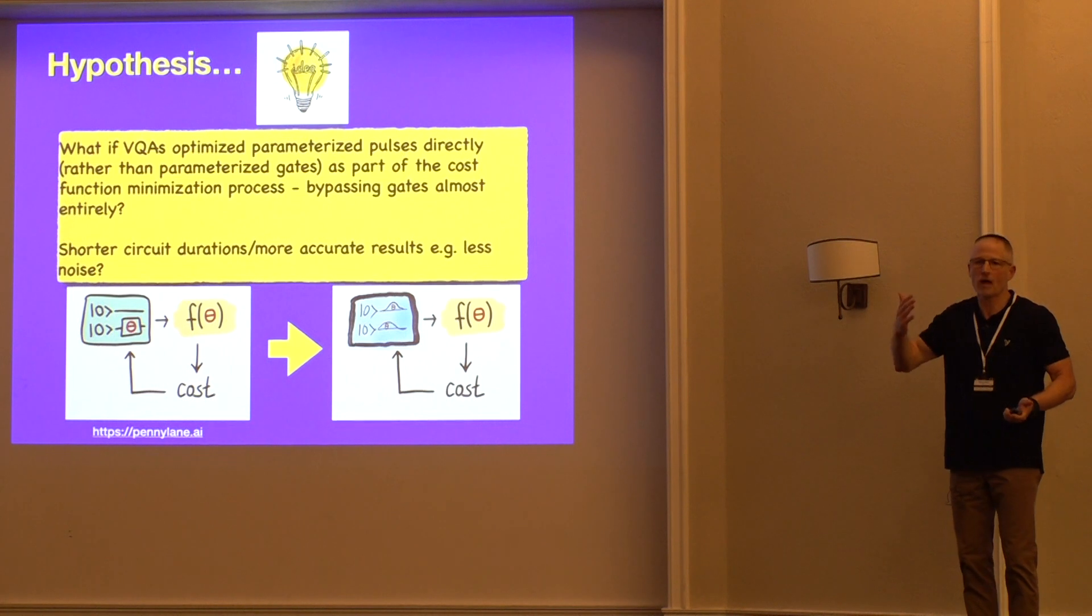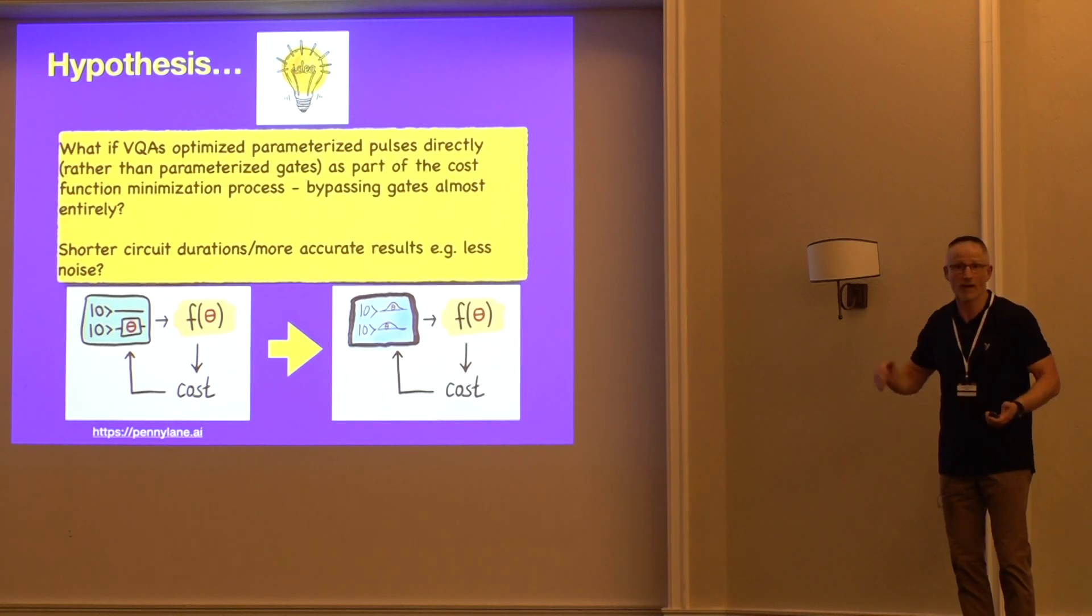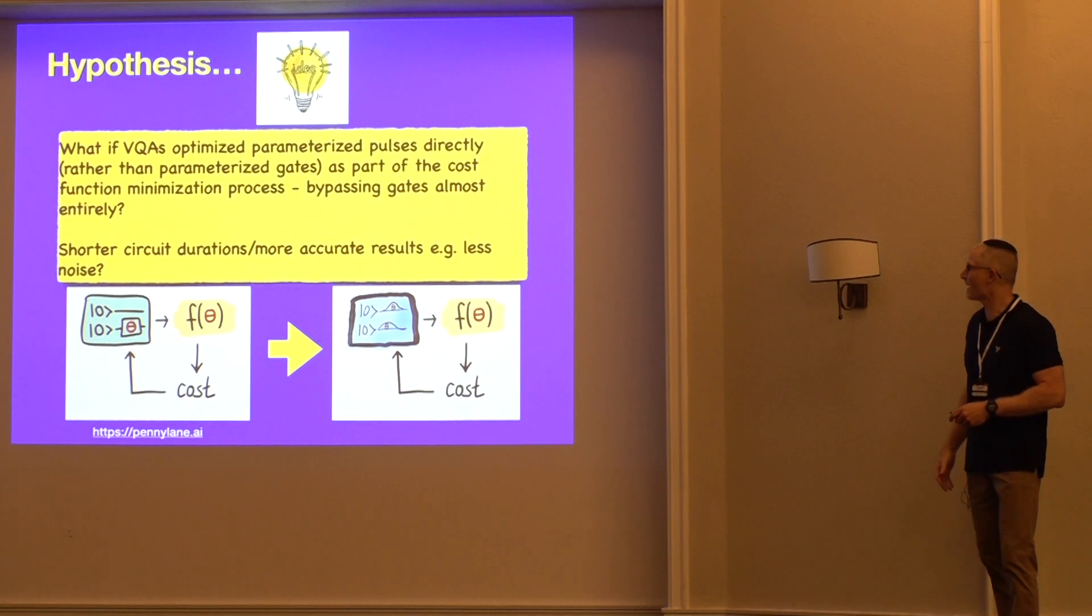What if the VQAs optimize parameterized pulses directly rather than parameterized gates as part of the overall cost function minimization process, basically bypassing gates almost entirely? I mean, the word gate itself already has a connotation of being in the way, right? So we want to get rid of the gates. We would replace something like this with something like this, where instead of a parameterized quantum circuit based on gates, it would be a parameterized quantum circuit based on pulses directly, and those would be optimized through the overall VQA optimization procedure.